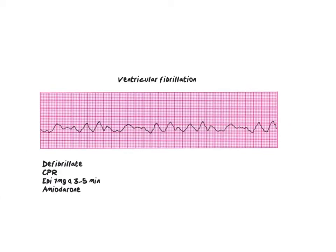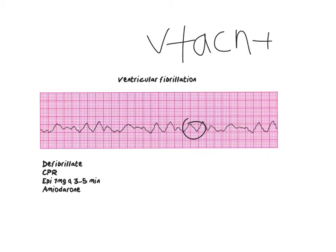This is ventricular fibrillation. Anytime you look at a rhythm and think 'what the hell is that?', it's usually ventricular fibrillation — not always, but you really can't tell what's going on. There are no actual QRS waves. The first thing we do is assess our patient, because sometimes this shows up on the monitor and the patient is actually fine — it may be artifact. We check for pulses, and if there's no pulse, we start CPR immediately and we defibrillate. Ventricular fibrillation is one of the shockable rhythms — the only two shockable rhythms are VTAC and VFib.